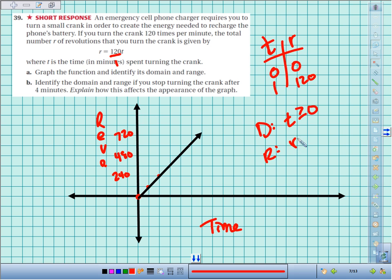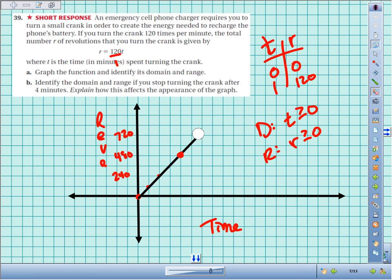Part B says identify the domain and range if you stop turning the crank after four minutes. So I'm going to stop after one, two, three, four minutes. I'm going to stop it right there. So really I'm going to peel the graph back and stop it right there.